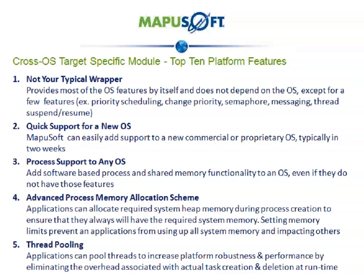The following are the top ten features of the cross-OS target-specific module. Number one, it is not a wrapper. Cross-OS provides most of the OS features by itself and does not depend on the OS except for a few features, resulting in better performance and less dependency on the operating system. Number two, Mapusoft can easily add support to a new commercial or proprietary OS typically in two weeks. Number three, cross-OS provides process support to any OS, adding software-based processes and shared memory functionality to an OS even if it does not have those features.